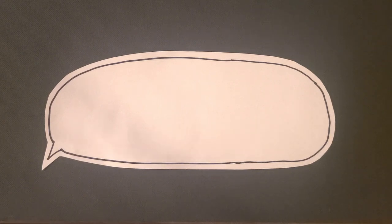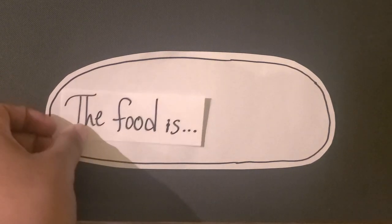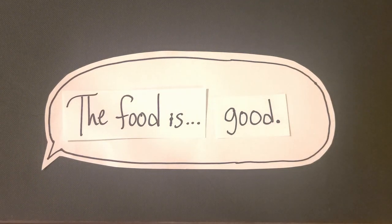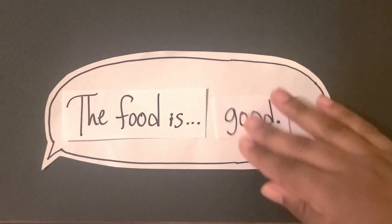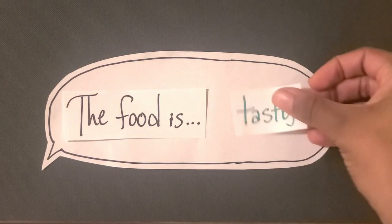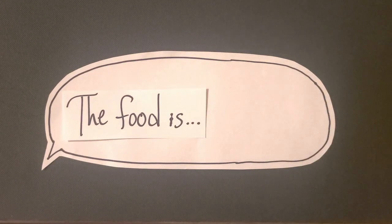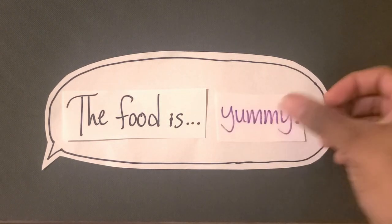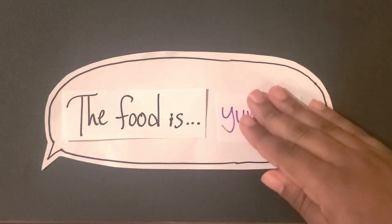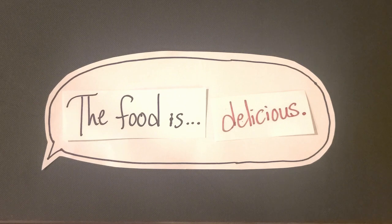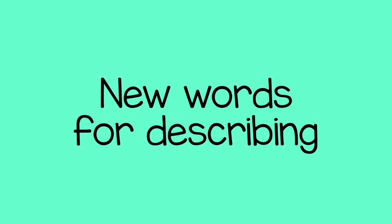Instead of saying the food is good, you can use other words like tasty, yummy, or delicious. Doing this activity helps a child learn new words for describing things.